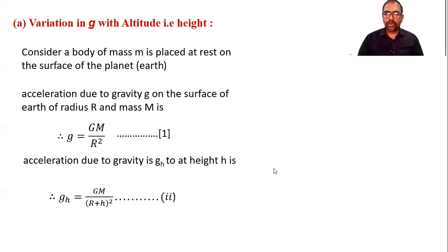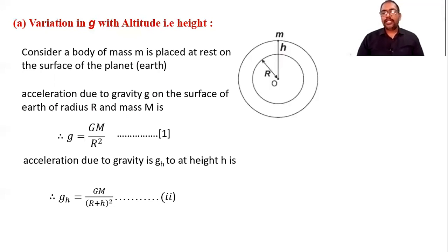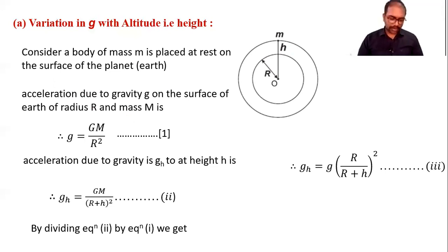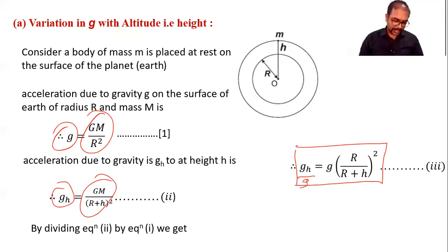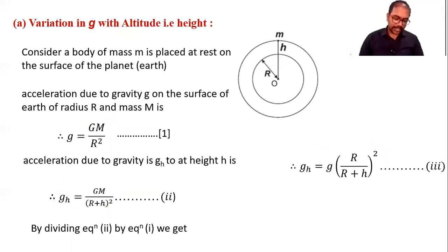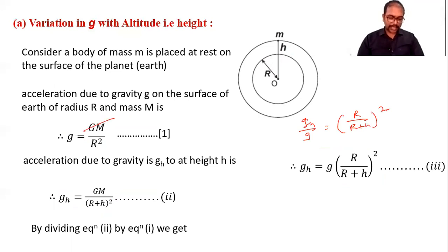We now compare these two equations to draw a conclusion about which is greater. Dividing equation two by equation one: g_h/g = [GM/(R+h)²] / [GM/R²]. After cancellation, GM cancels and we get g_h/g = R²/(R+h)², so g_h = g × (R/(R+h))².